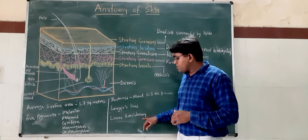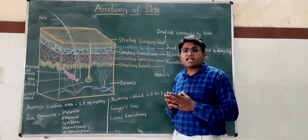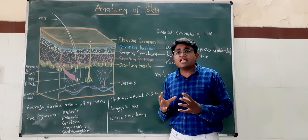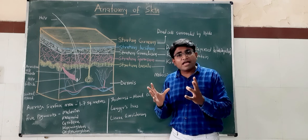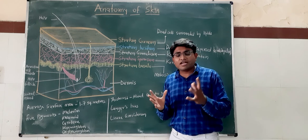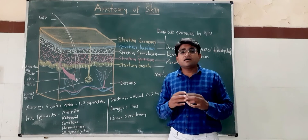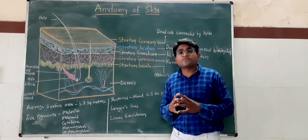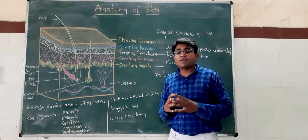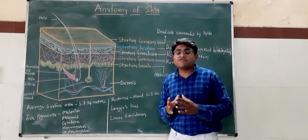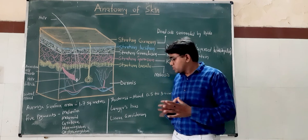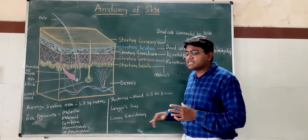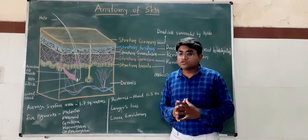Then there is linea gravidarum. When the skin is more stretched, there is a presence of white lines — as seen in obese persons, where ruptured areas and white lines are present. These are due to the breakage of elastic fibers. So these are known as linea gravidarum and can be seen in obese persons or after pregnancy.